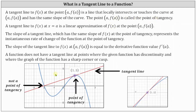Looking at the graph below, the blue curve is given by the function f of x. The red line is tangent to the blue curve at the point one comma three. The point one comma three is the point of tangency. We say the red line locally intersects or touches the curve at the point one comma three because notice how it also intersects the curve at the point negative two comma zero. But this is not a point of tangency because the red line does not have the same slope of the blue curve at the point negative two comma zero.